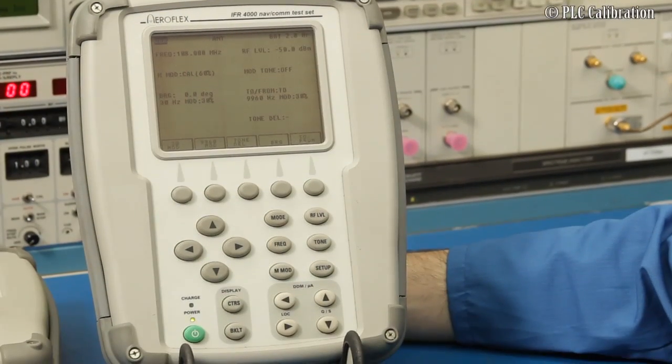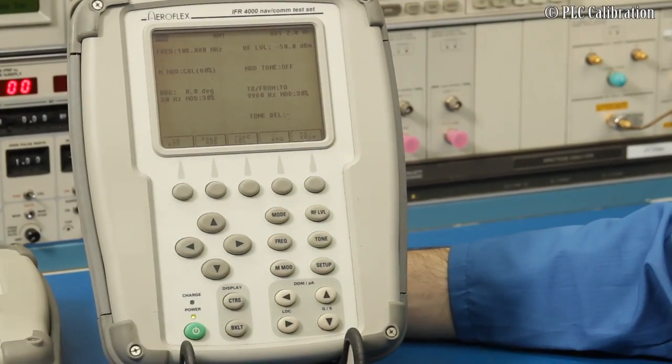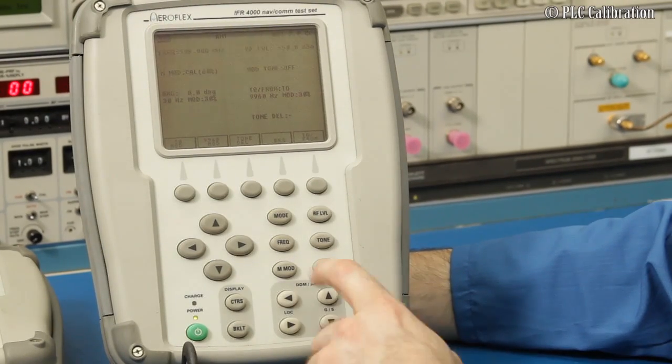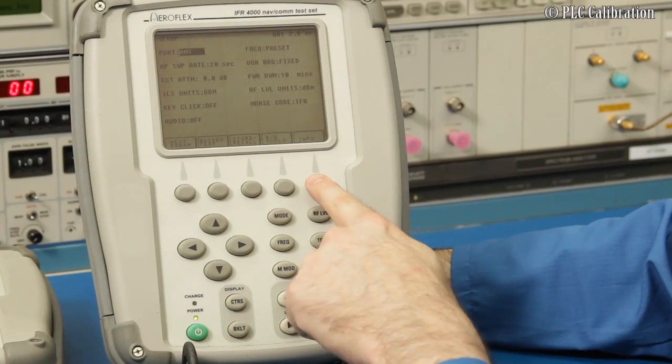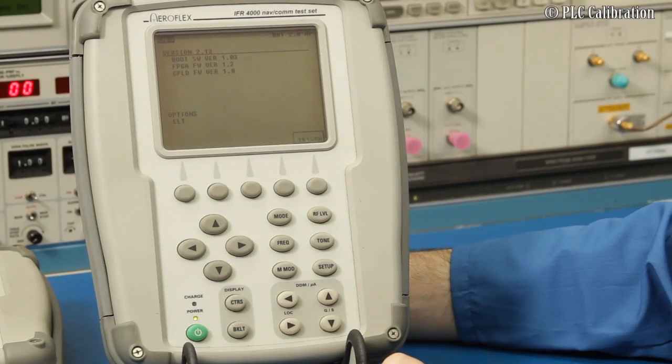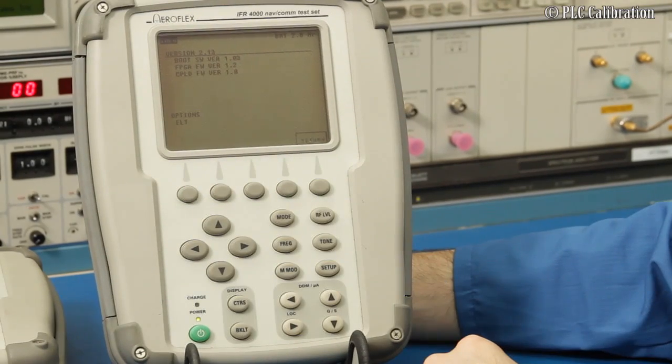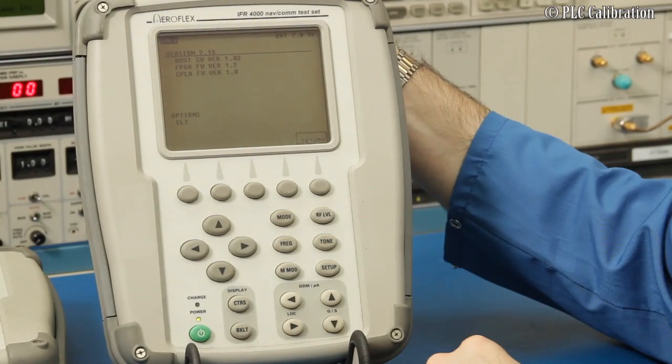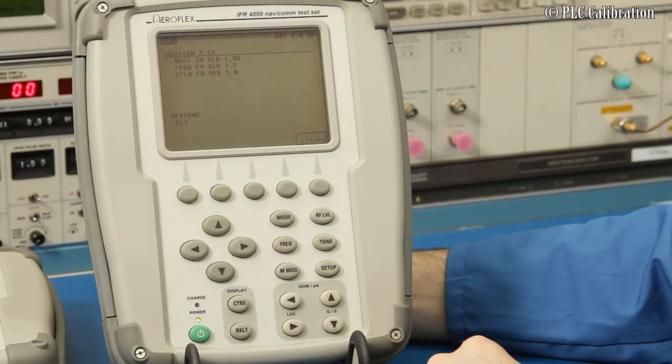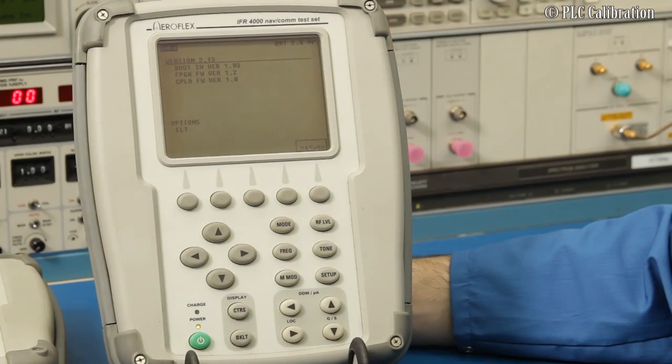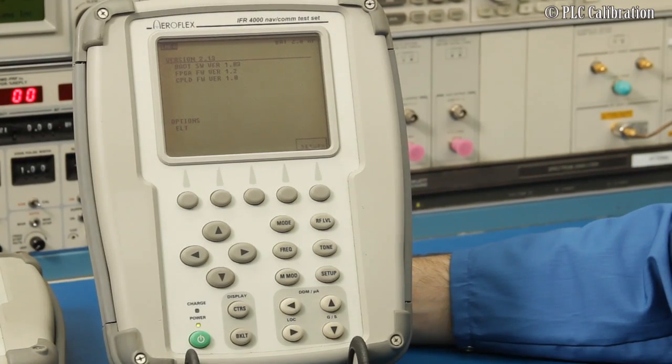A few things that I want to show you on the IFR 4000 are how to actually check to see what options are installed. If I go into the setup menu and then you go under info here, you can actually see that you've got your software version, which is upgradeable through either the 15 or the 25 pin port that's on the top. And also the option for the ELT is installed. So that's your 1215-243-406 ELT.